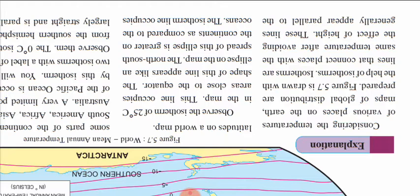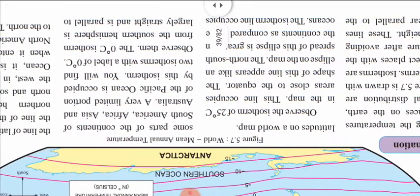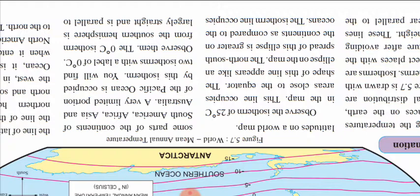The north-south spread of this ellipse is greater on the continents as compared to the oceans. The isotherm line occupies some parts of the continents of South America, Africa, Asia, and Australia. A very limited portion of the Pacific Ocean is occupied by the isotherm. You will find two isotherms with a level of 0 degrees Celsius.